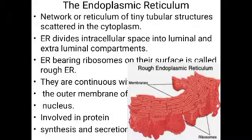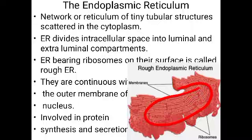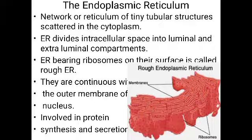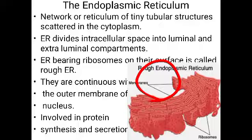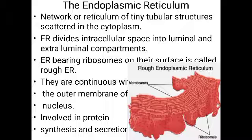The two distinct compartments formed by the membranes of the endoplasmic reticulum are the luminal compartment and the extra-luminal compartment. The luminal compartment is the cavity — the space present between the membranes, as seen in the picture. The outer chamber is the extra-luminal compartment, which corresponds to the cytoplasmic region.